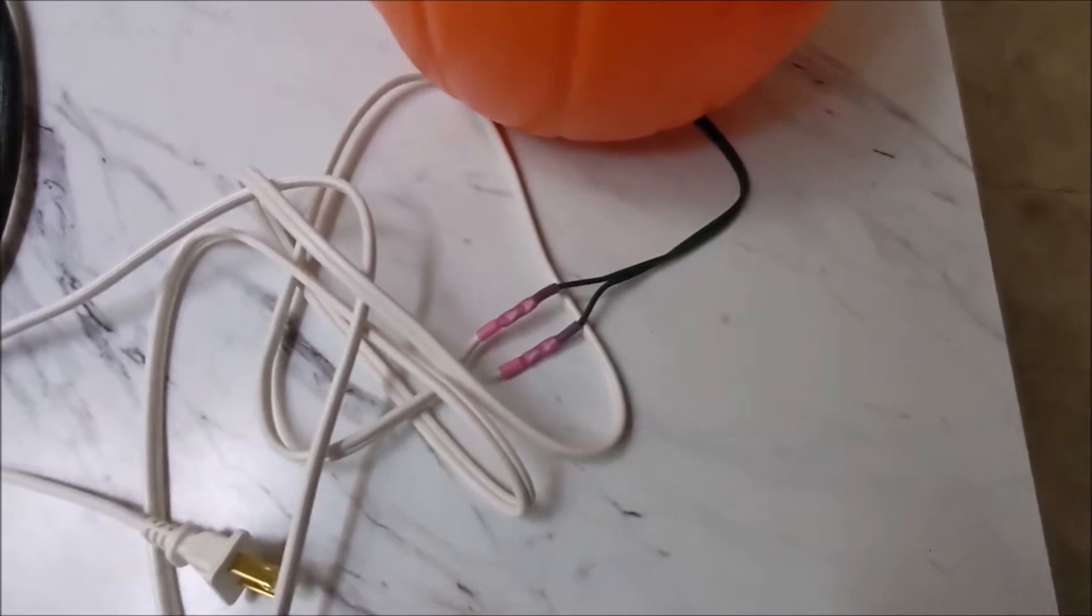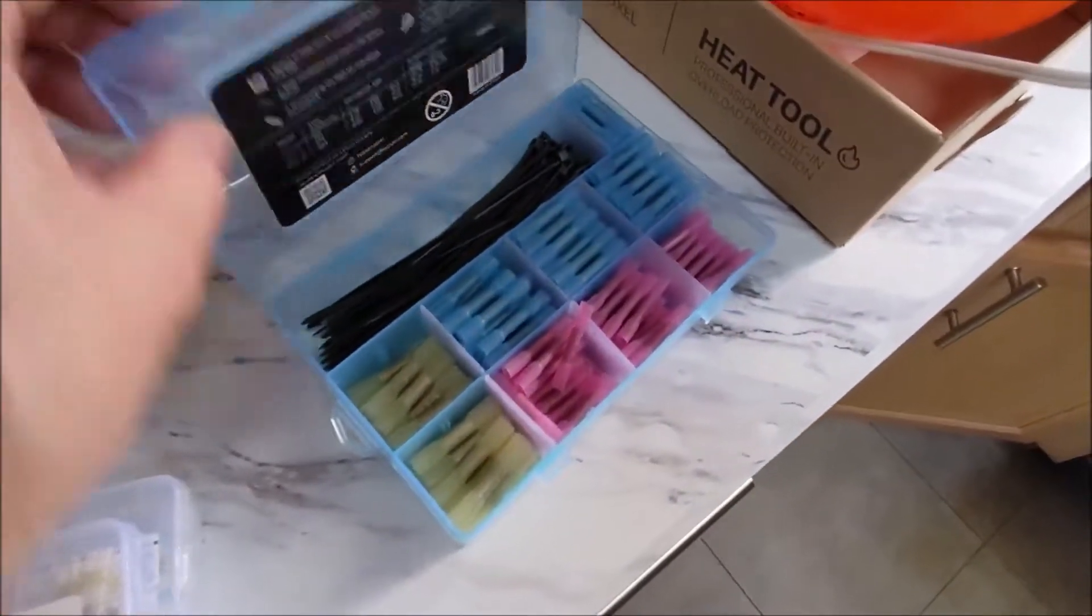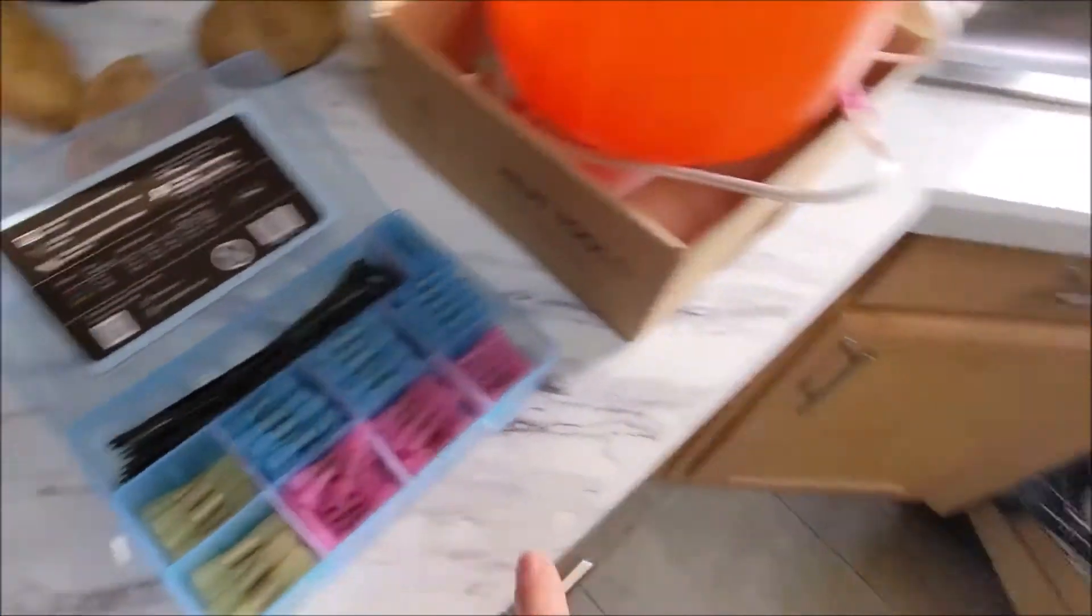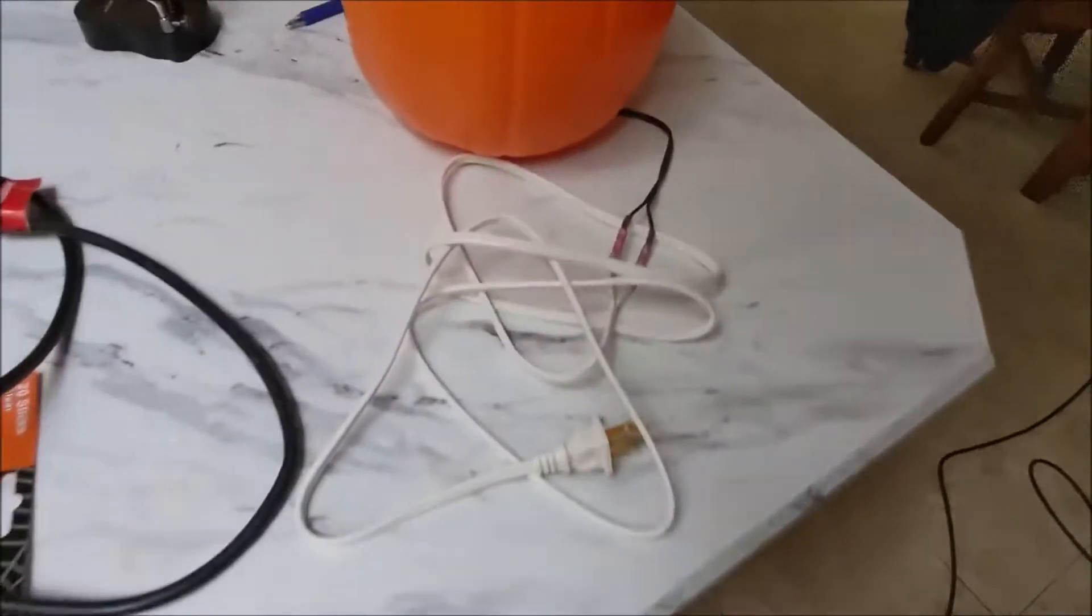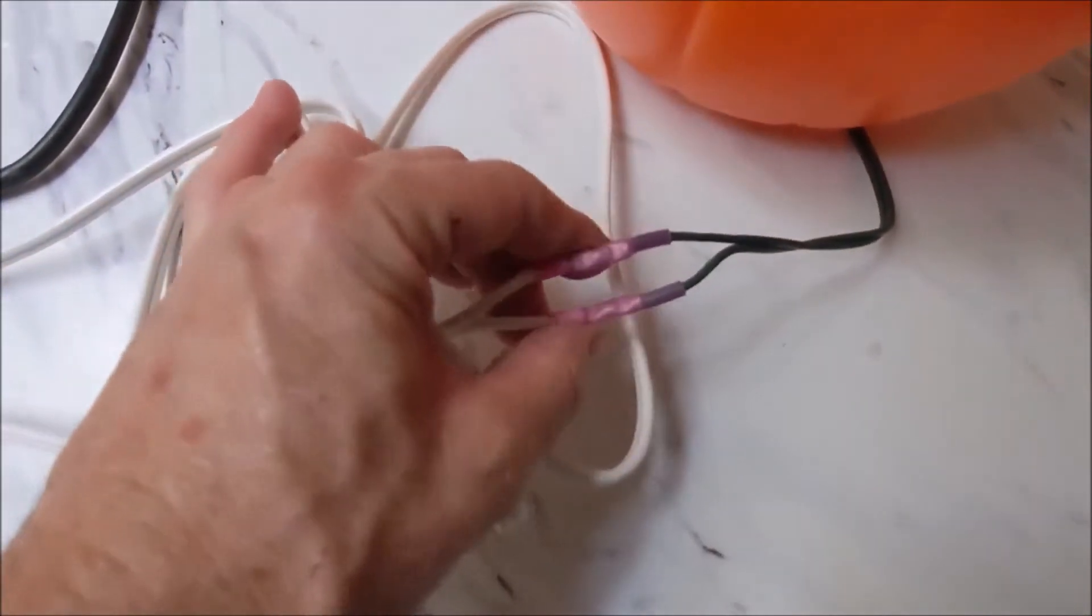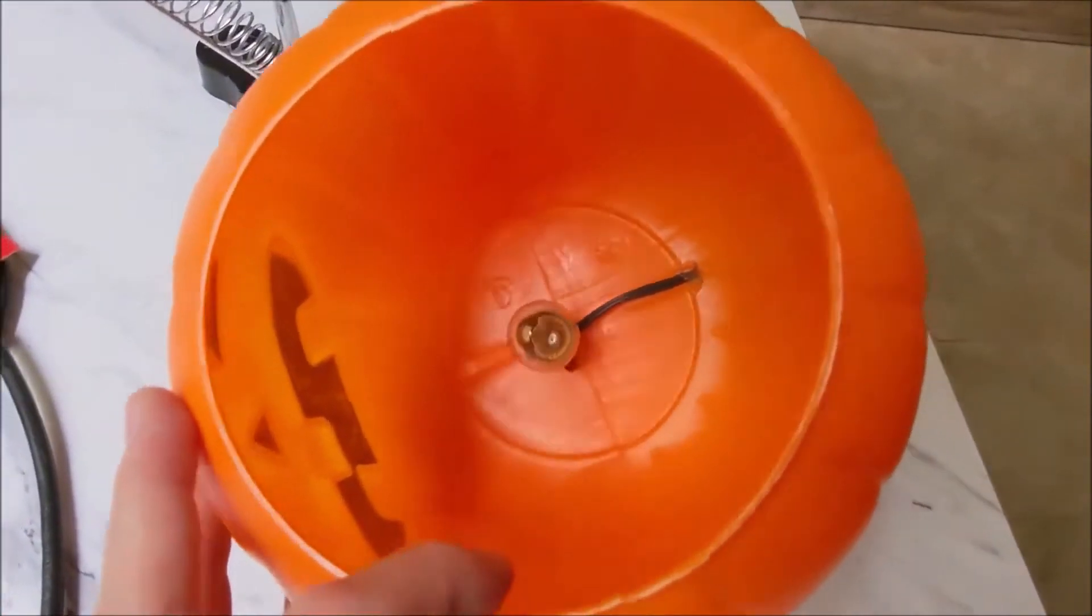And then I used these shrink butt connectors, pull that out, and you crimp it on here. And then you use a heat gun and it shrinks the outside tubing and makes a waterproof connection. So that's really all there is to it.